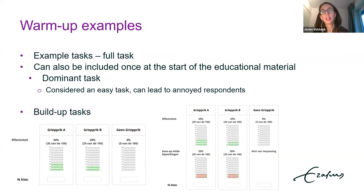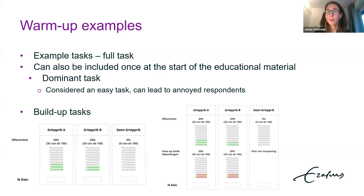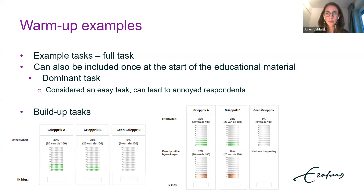Before respondents start answering choice questions, it is common to practice with an example choice task. This can either be a full choice task that is part of your experimental design — in which case it's advised to randomize the order, since there will be a learning effect with the first task being most difficult — or a very simple task with a dominating alternative. Although a dominating alternative might be attractive from a training perspective, it might annoy respondents and it's not certain that people who do not pick the dominating alternative failed to understand the task, as their choice might still reflect actual preferences.